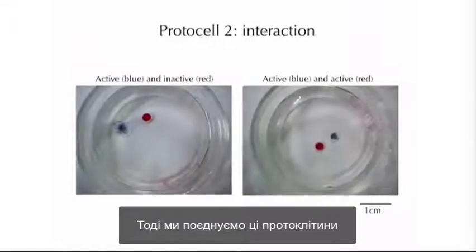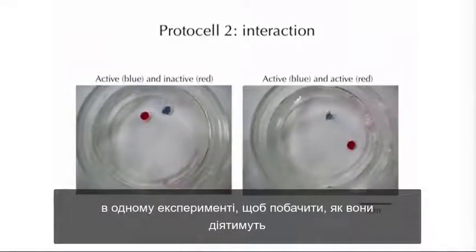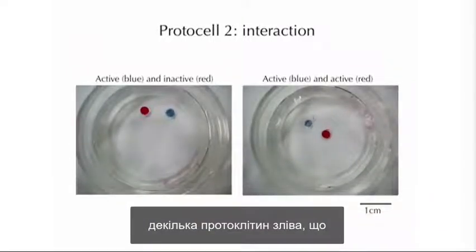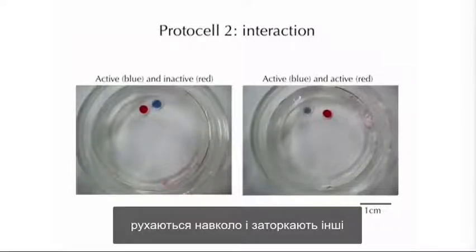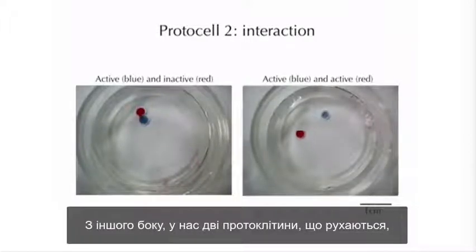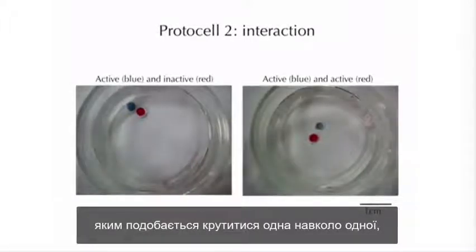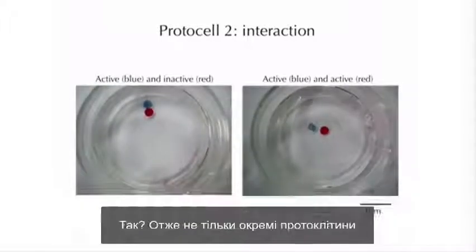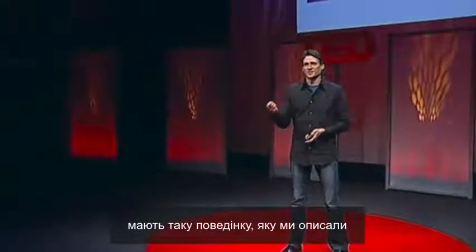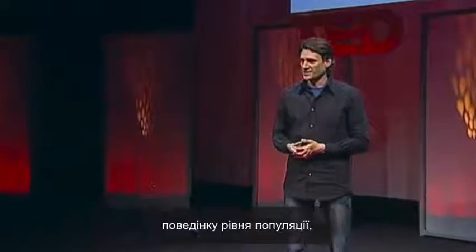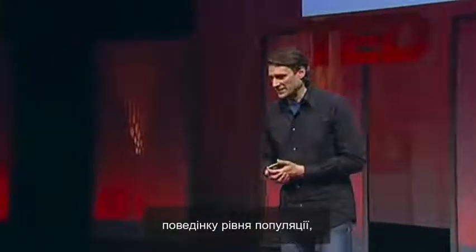We put these protocells together in a single experiment to see what they would do. Depending on the conditions, some protocells move around and like to touch other structures in their environment. In another case, two moving protocells circle each other and form a kind of complex dance. So not only do individual protocells have behavior, but we also have population-level behavior similar to what organisms have.